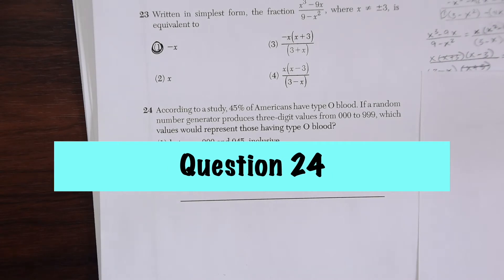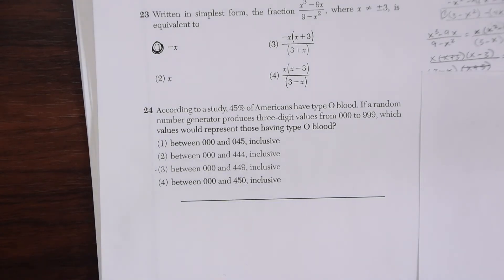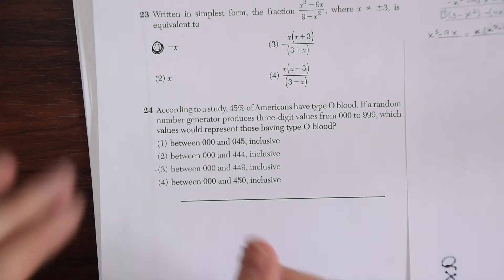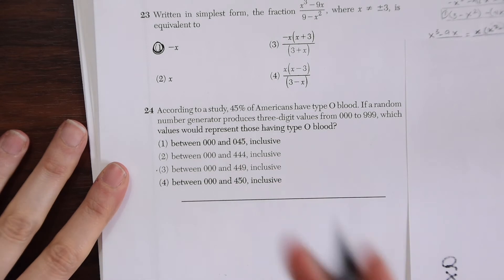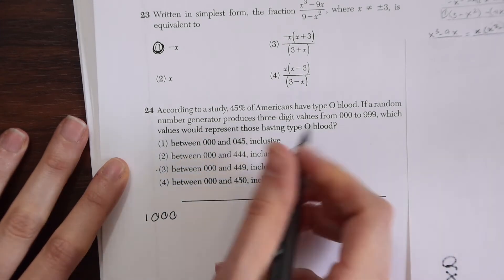For question 24 we have according to a study 45% of Americans have type O blood. If a random number generator produces three digit values from 000 to 999, which value would represent those having type O blood? So 45% of Americans have type O blood.